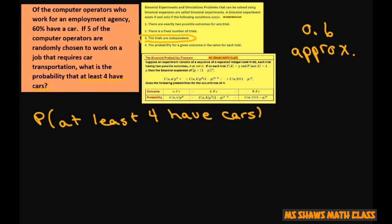So that's going to be equal to the probability that exactly four have cars, plus the probability that five have cars.